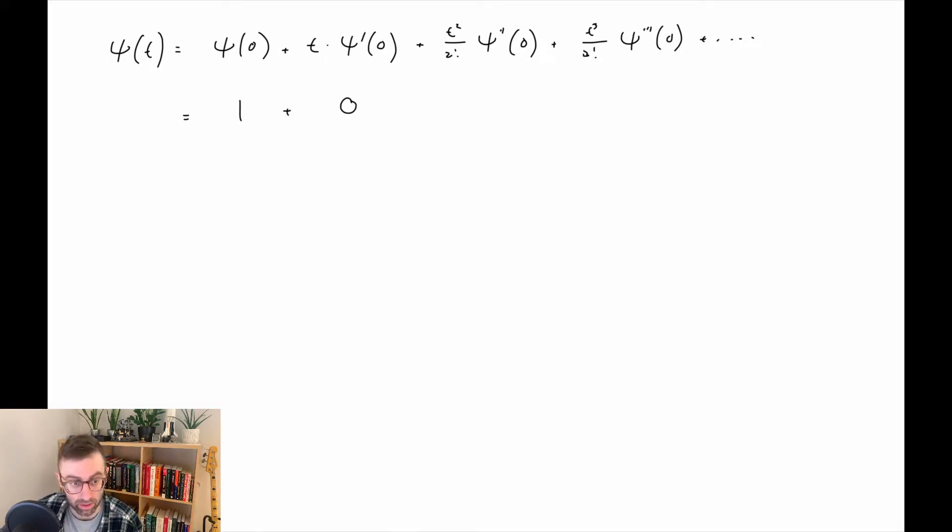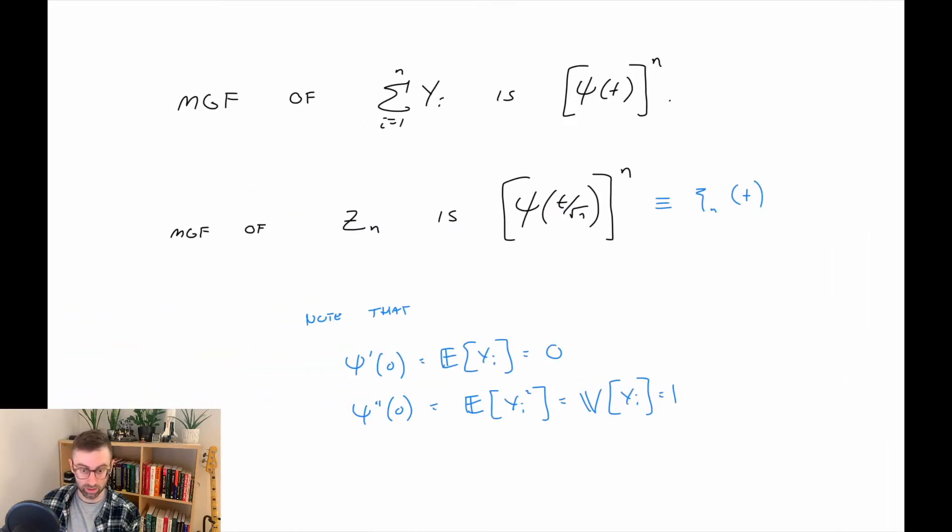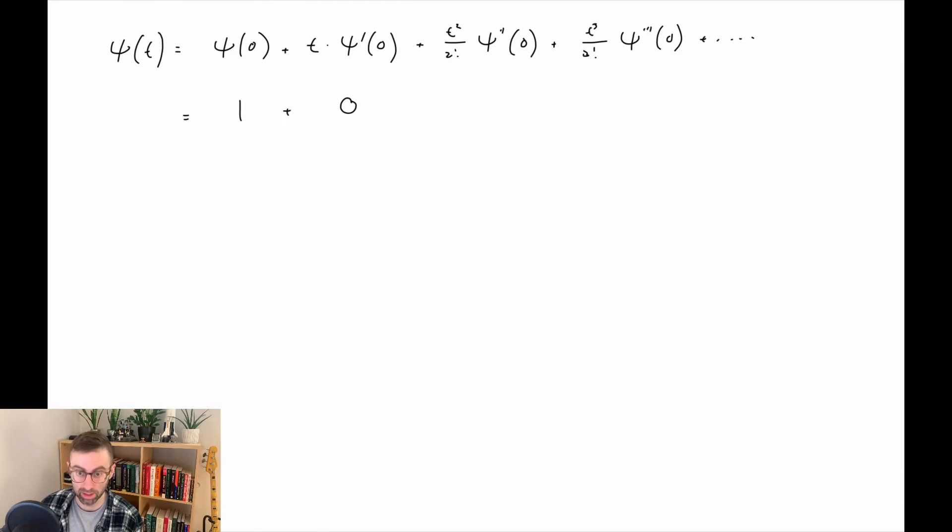We said that if we take a derivative and plug in zero, that is the mean, which is zero. So this second term is zero. This next term, the second derivative when zero is plugged in, is one according to what we did. So this is plus t squared over two, and then the next term we haven't done anything interesting to.